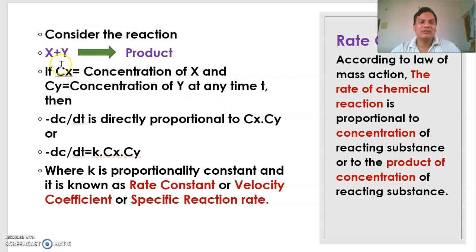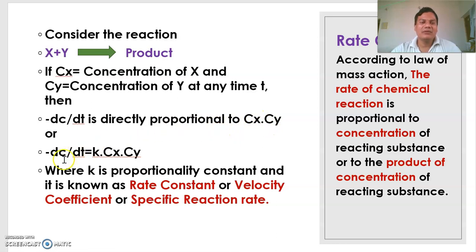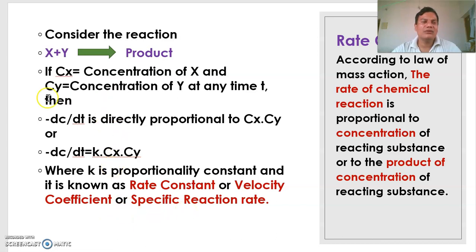The rate of reaction is directly proportional to concentration. For a general reaction where reactants X and Y give a product, the concentrations are Cx and Cy at any time T. Then, minus dCx/dt, the rate of reaction, is directly proportional to concentration of X multiplied by concentration of Y. So, minus dCx/dt is equal to K into Cx into Cy, where K is the proportionality constant.